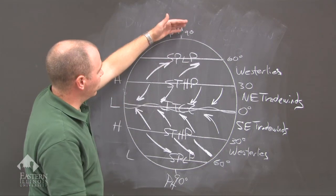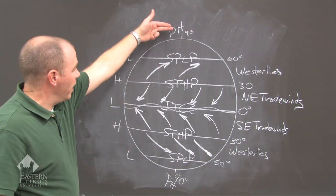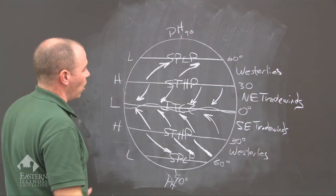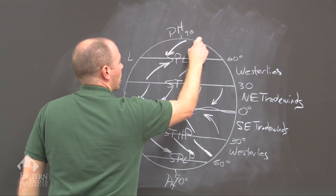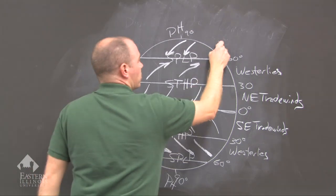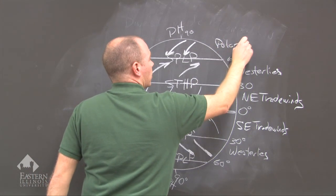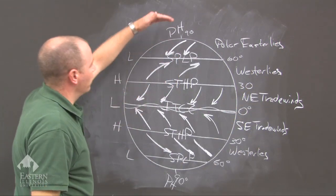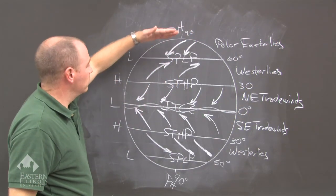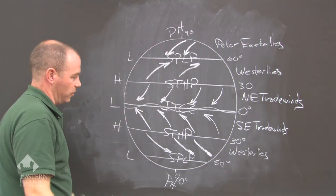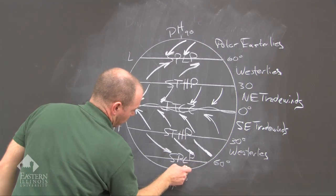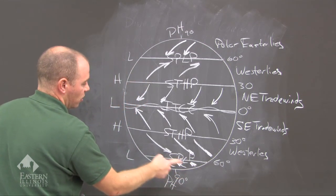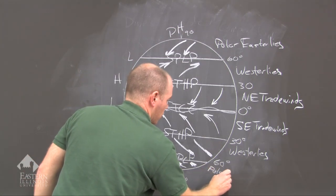Between 90 degrees north and 60 degrees north, we have a polar high at the pole and a low pressure at 60 degrees north, so air moves from high to low. These are called the polar easterlies. The same applies in the southern hemisphere — winds move from the polar high to the subpolar low pressure, again called the polar easterlies.